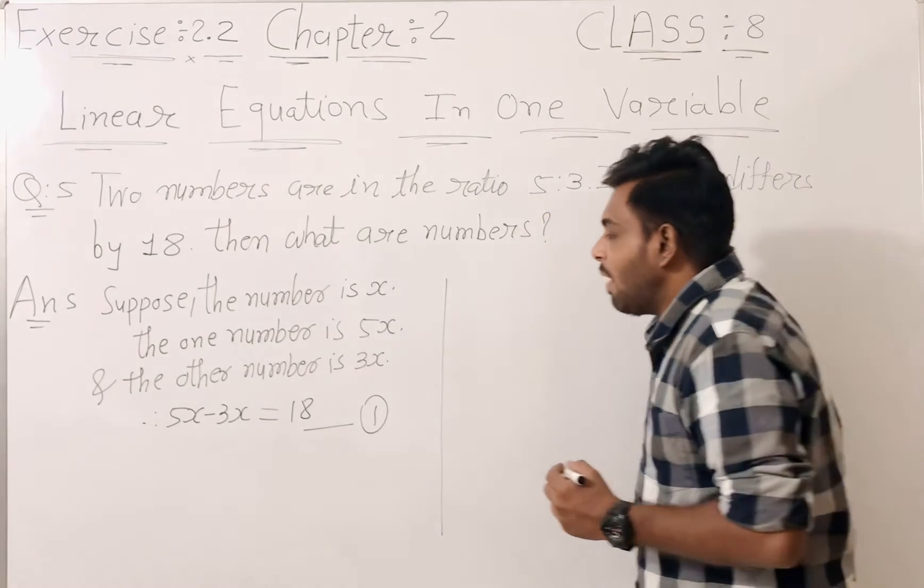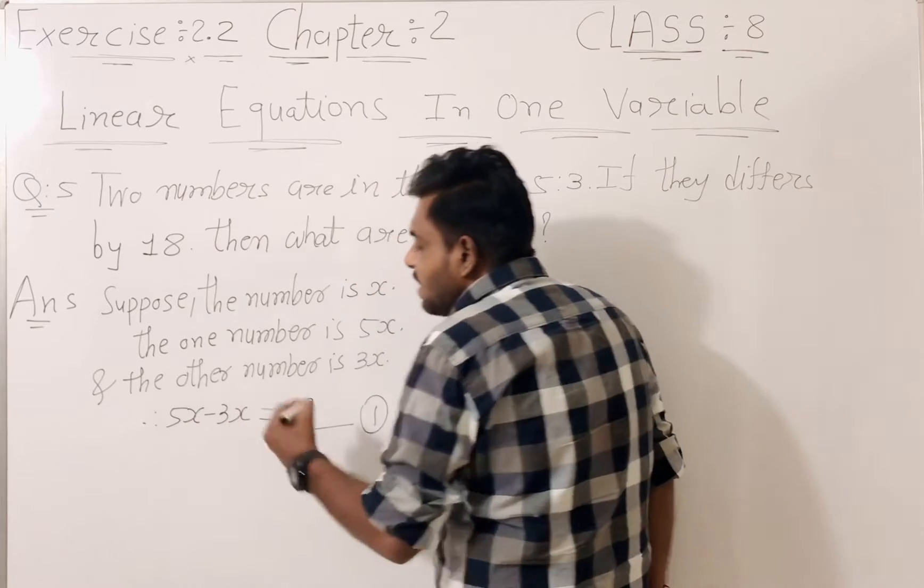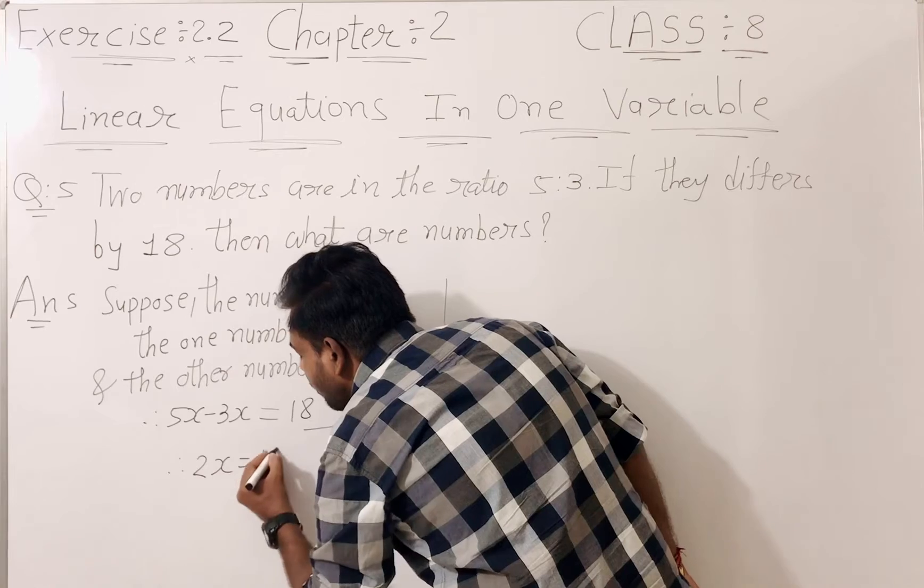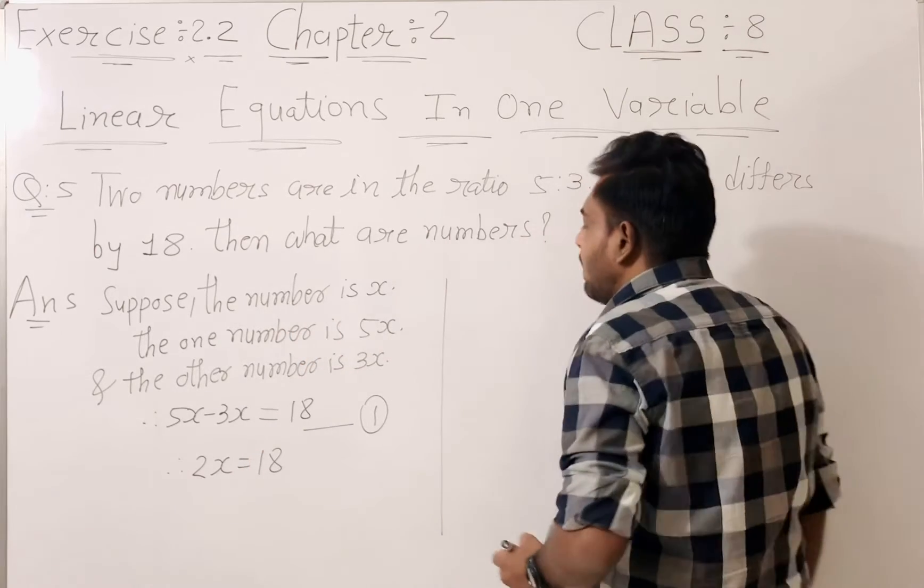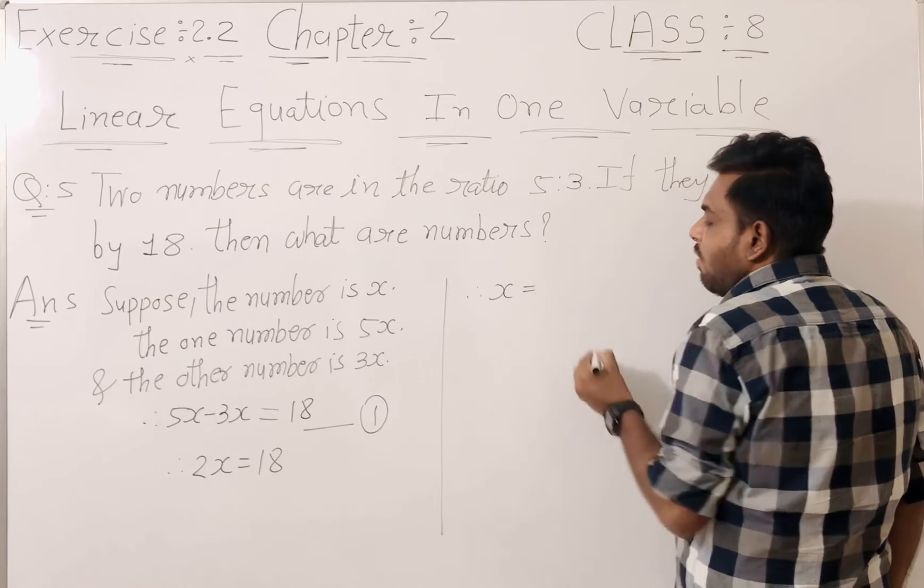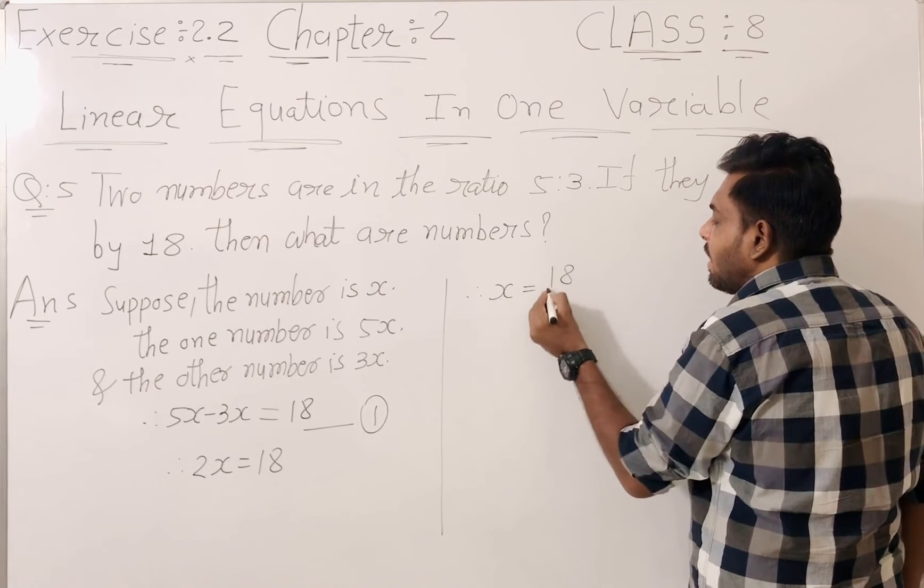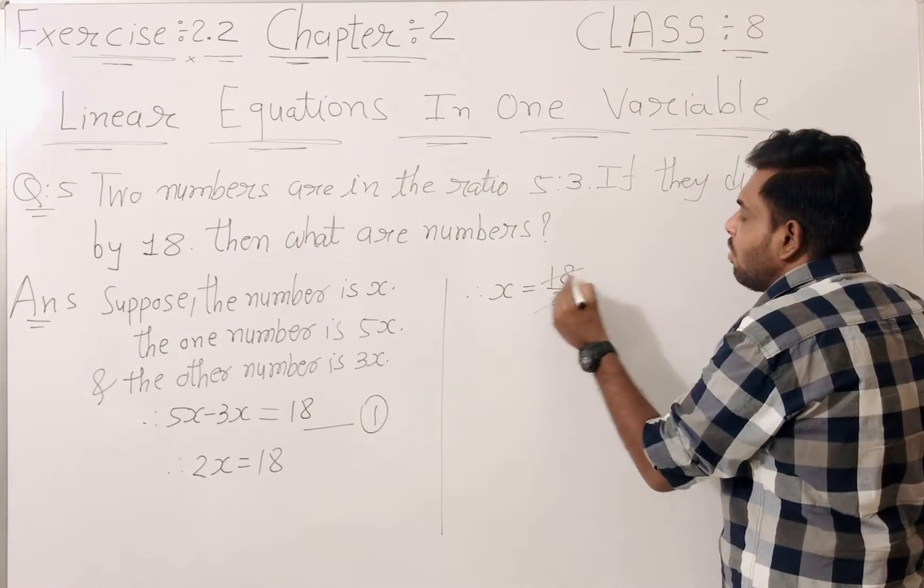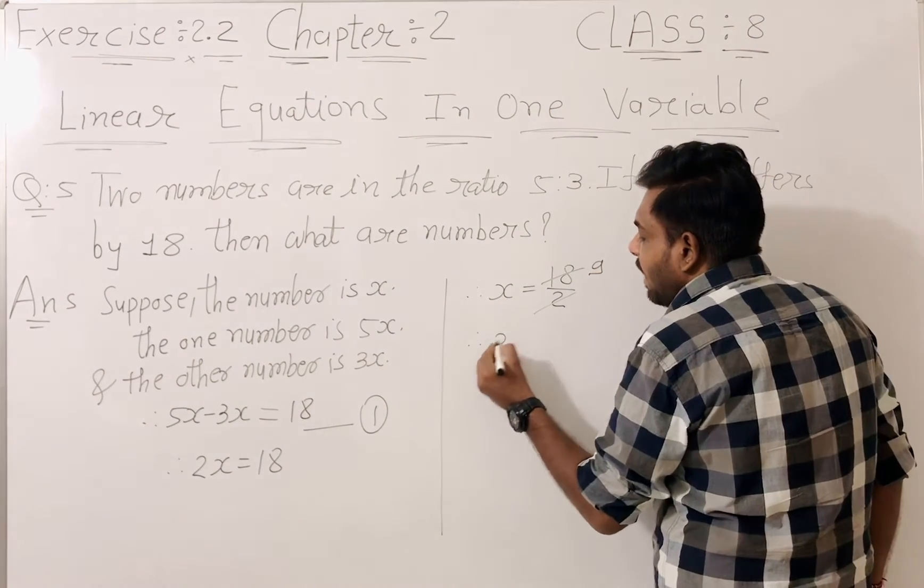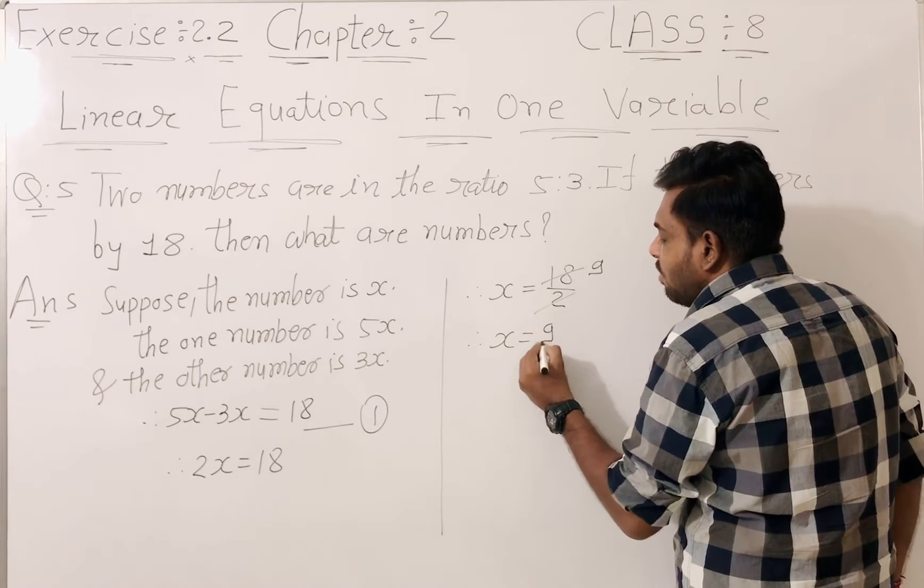Then what happens? 5x minus 3x. Then here we get 2x is equal to 18. Then x is equal to 18 by 2. I divide 2 into 18. Then here we get x is equal to 9.